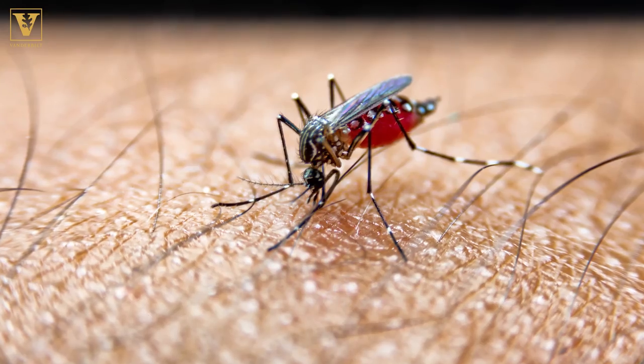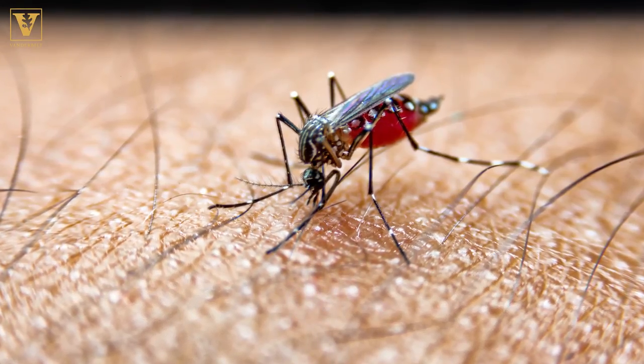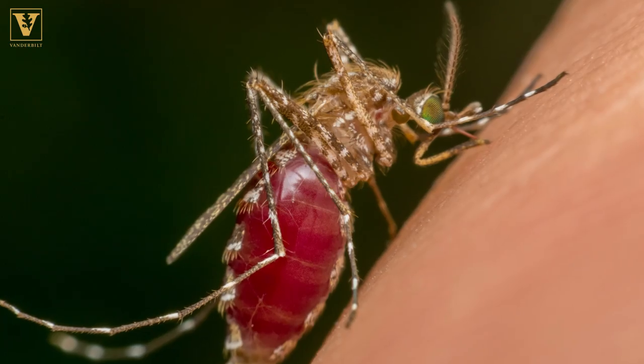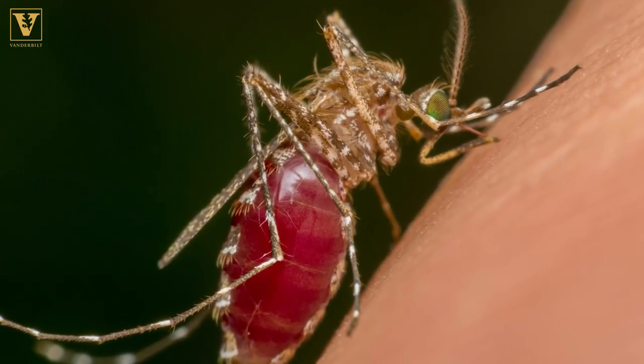Wolbachia have an ability to spread themselves from mother to offspring every generation through a mechanism that involves male infertility and nullifying that infertility in the female.